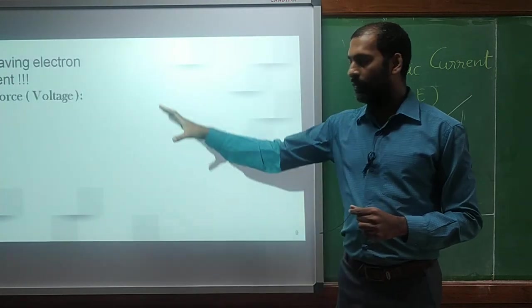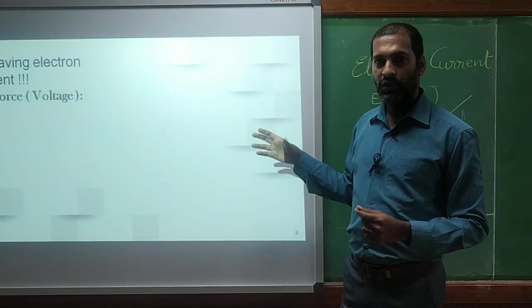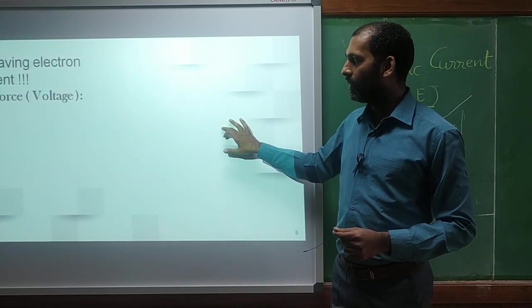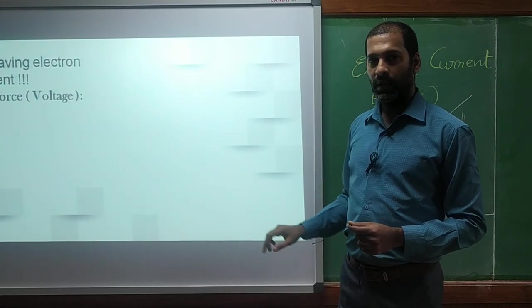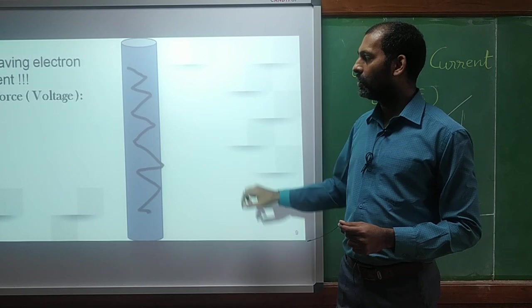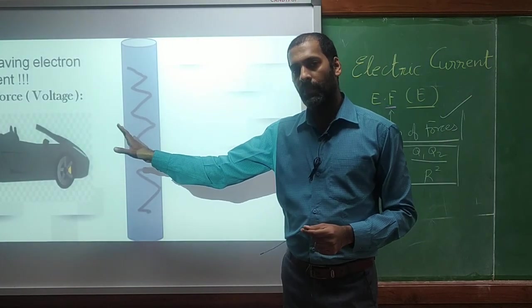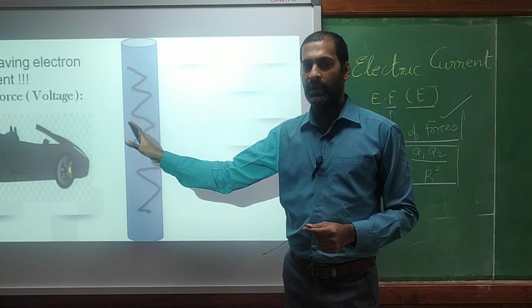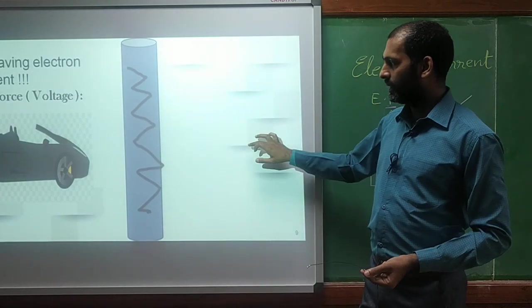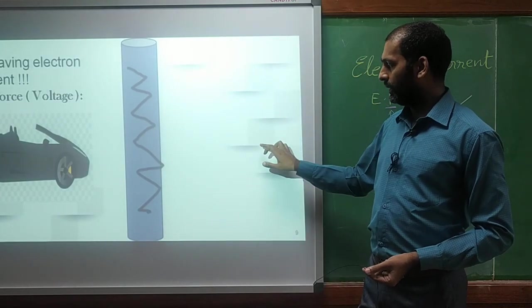Because we require some kind of driving force. Someone should give direction to those electrons. Someone should make move those electrons. What will be that driving force? That driving force is voltage. If I want to flow the current, I have to apply the voltage. And who can control the current? We have resistance to control the current. So it can stop, reduce the speed of current.